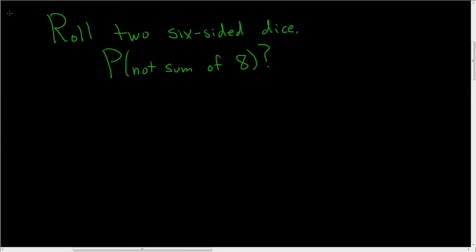So we're going to be rolling two six-sided dice, and we want the probability of not getting a sum of eight. So let's work this out carefully.